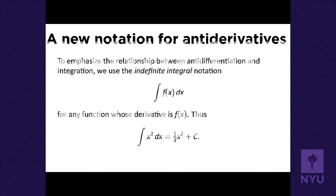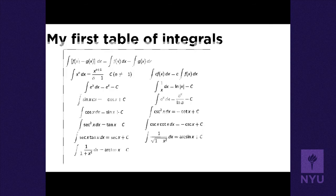All of our antiderivatives learned so far can be rewritten as indefinite integrals — this is called a table of integrals. The antiderivative of a sum is the sum of antiderivatives (sum rule in reverse). The power rule: antiderivative of xⁿ is x^(n+1)/(n+1), as long as n ≠ -1.